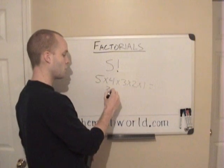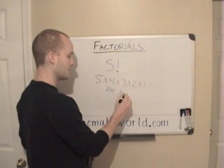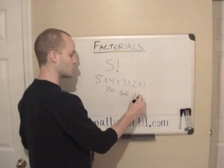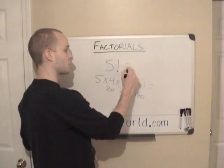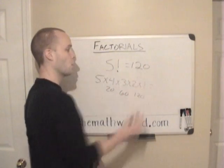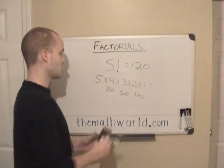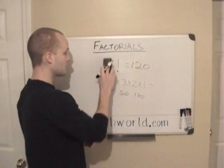So 5 times 4 is 20, times 3 is 60, times 2 is 120. So 5 factorial equals 120.